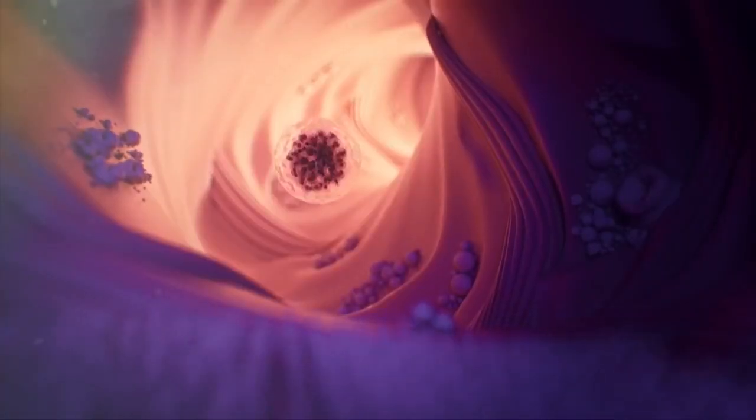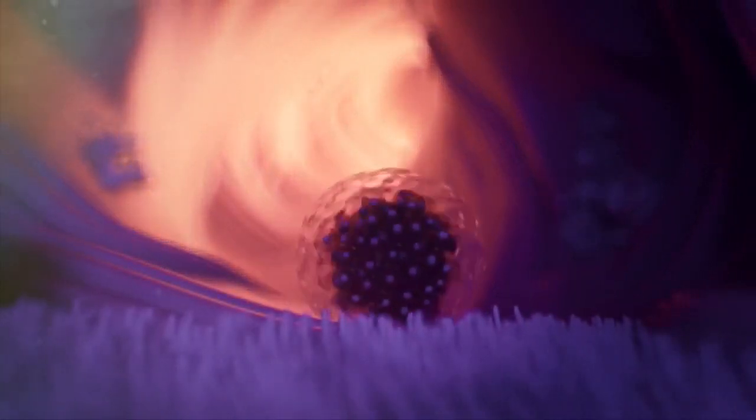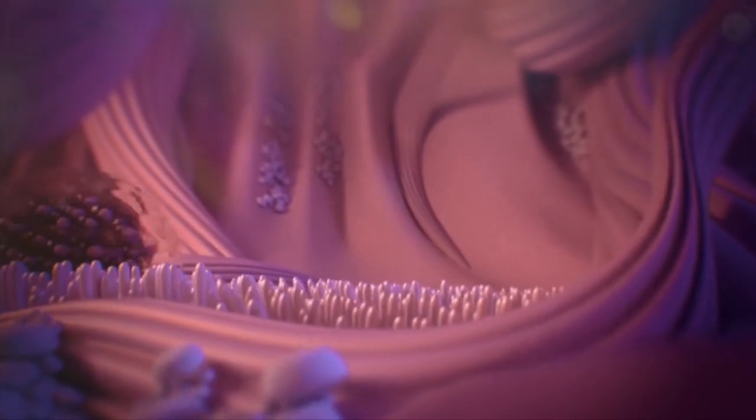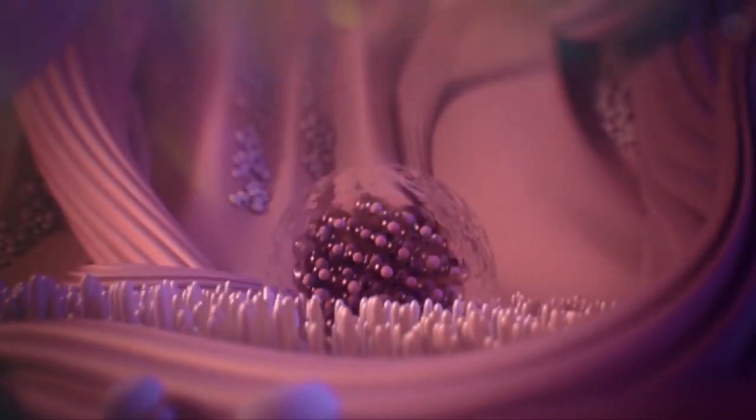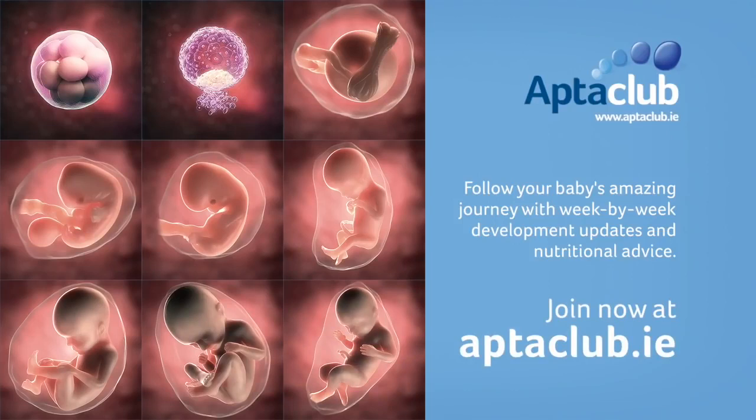a blastocyst is formed with an inner layer of cells making up the embryo and an outer layer which will protect and nourish the embryo. The blastocyst then finds a comfortable place to stay in the uterus for the next 40 weeks to develop and transform into a human being.